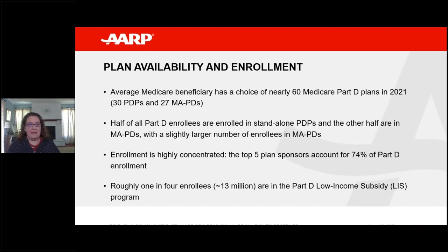How many plans are people evaluating? The answer is a lot. On average, beneficiaries are looking at roughly 60 Medicare Part D plans between PDPs and MAPDs in 2021. About half of Part D enrollees are enrolled in standalone PDPs and the other half in MAPDs, with a slightly larger number now in the MAPDs, which is actually a reversal — traditionally we've been seeing more people in PDPs. It's also important to keep in mind that enrollment in Part D is really concentrated. There are five plan sponsors that account for almost three-quarters of Part D enrollment. Going back to the low-income subsidy or extra help, about one in four enrollees are enrolled in it, so it's a really important part of the program for helping beneficiaries afford their prescription drug costs.